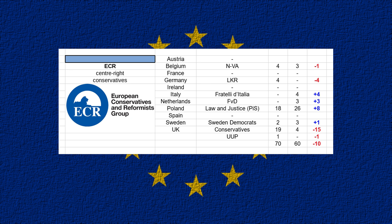Fratelli d'Italia — Georgia Meloni's party — gained four seats. The FVD — Forum for Democracy, Thierry Baudet's party — gained three seats, though it was somewhat disappointing: they had come first in recent Senate-provincial elections with 14.5% but came joint fourth this time with 10.9%. Law and Justice, the ruling party in Poland, had a good night. Sweden Democrats picked up a seat. Very bad night for the UK Conservatives, and the UUP lost their seat in Northern Ireland.